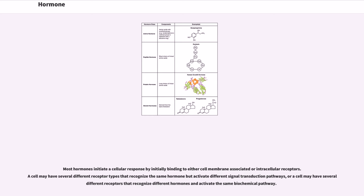Most hormones initiate a cellular response by initially binding to either cell membrane-associated or intracellular receptors. A cell may have several different receptor types that recognize the same hormone but activate different signal transduction pathways, or a cell may have several different receptors that recognize different hormones and activate the same biochemical pathway.